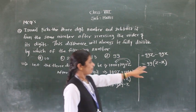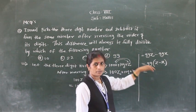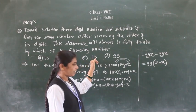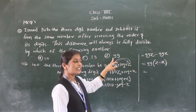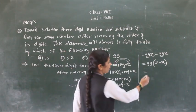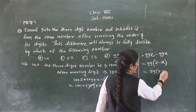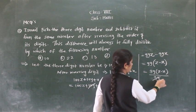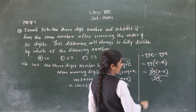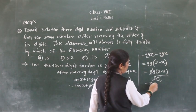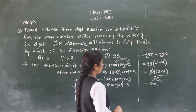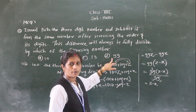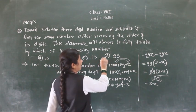They don't ask for the remainder — they ask which number this difference is always fully divisible by. Is it divisible by 10? No. By 22? No. By 30? Not possible. We check 99: 99(z minus x) divided by 99 gives exactly z minus x, with no remainder. So this number is fully divisible by 99. That is the correct option.